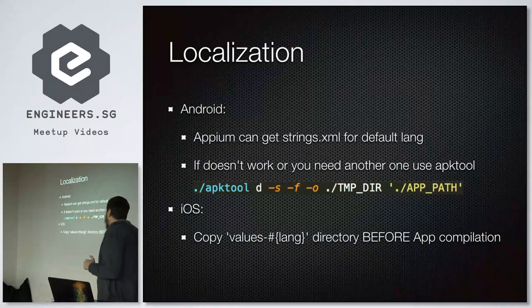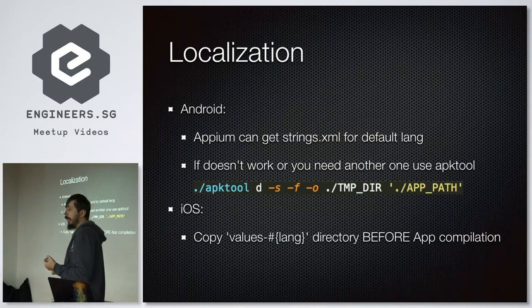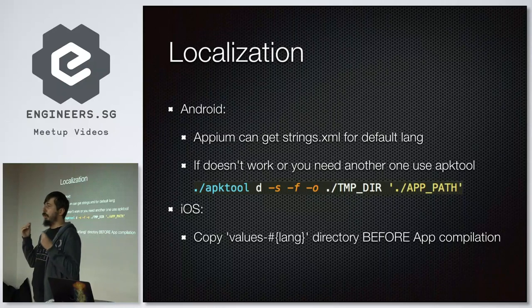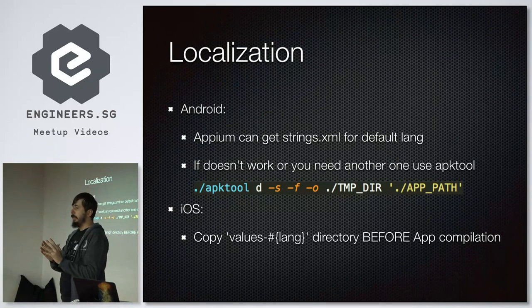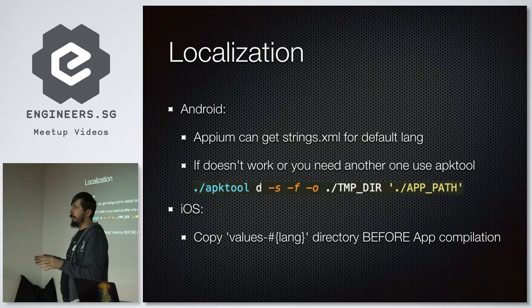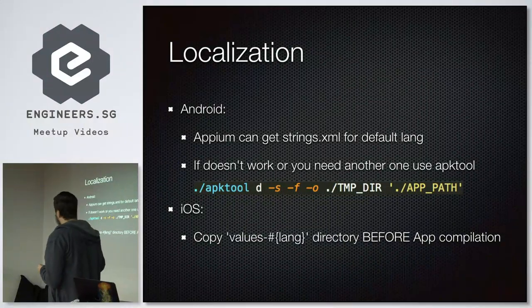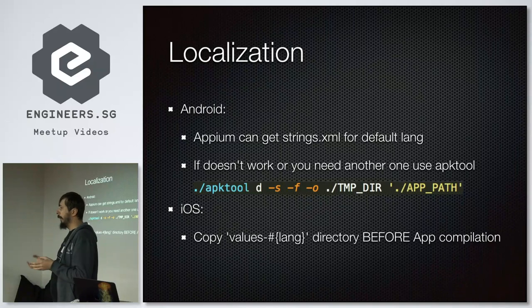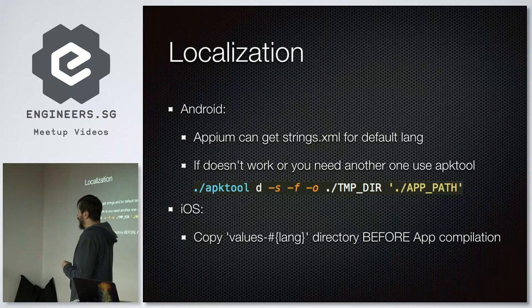Appium can get the default strings XML for Android applications — this is a dictionary of keys and values used by developers for localization, keeping all strings in one place. For iOS, this cannot be done because iOS compiles the application and transforms all files into bytecode. So if you need to test localization for iOS, you need to copy the strings directories from source code before compilation.